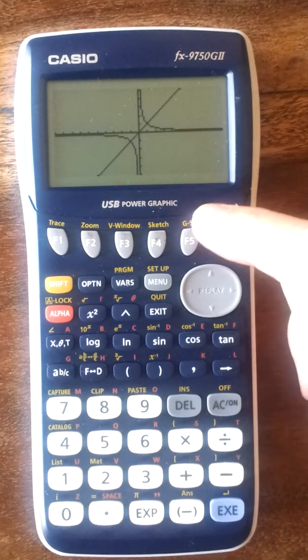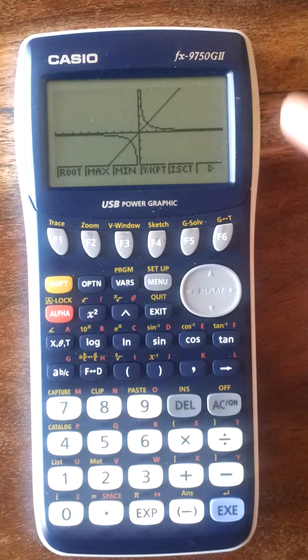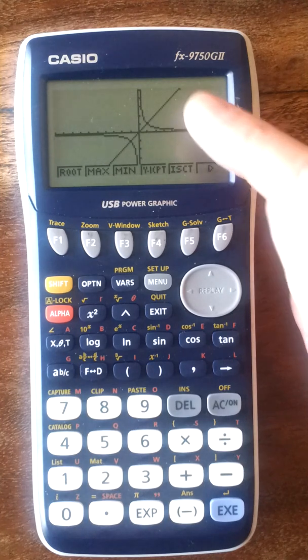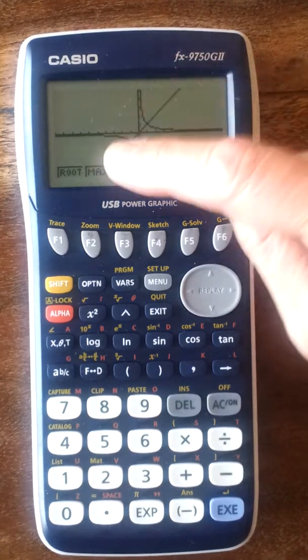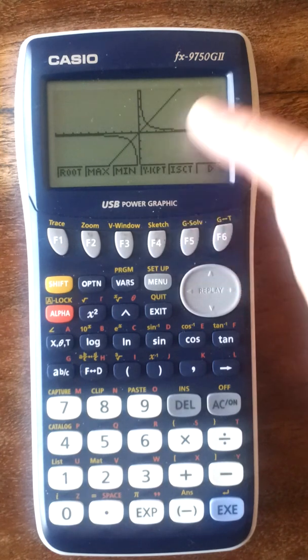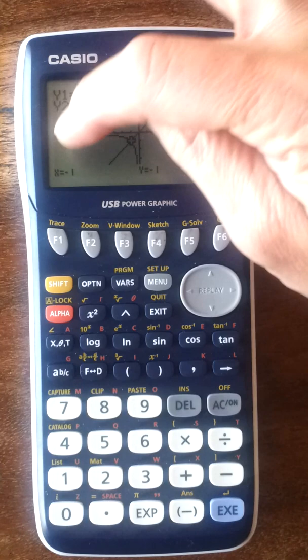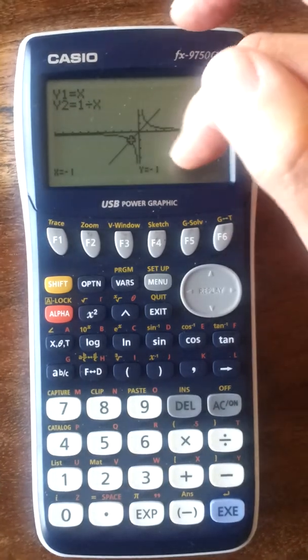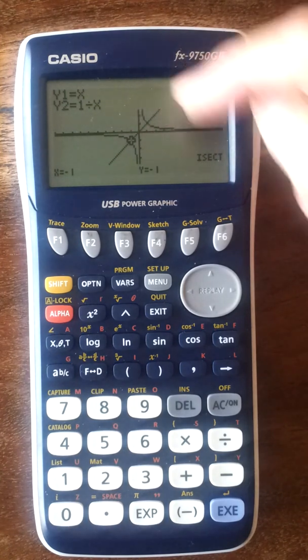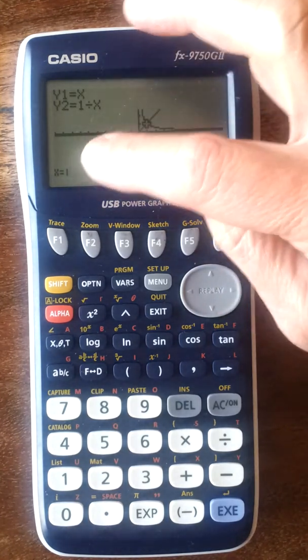So let's try the G-solve and see what I find on here. G-solve. Now, because there's two curves, we can't get the root, but we can get the intersection. So let's have a look at the intersection between the two graphs. F5, G-solve. Let's intersect there. Now, there's the first intersection. x is negative 1, y is negative 1. If I press the replay button, move along to the right, there's the next one. x is 1, y equals 1.